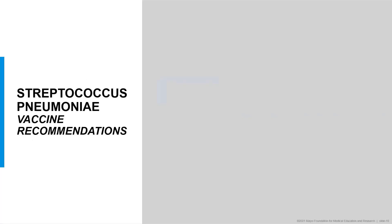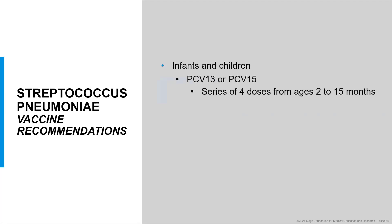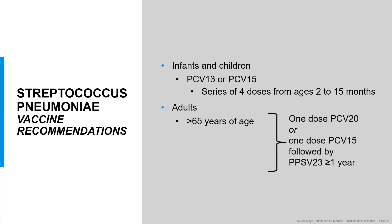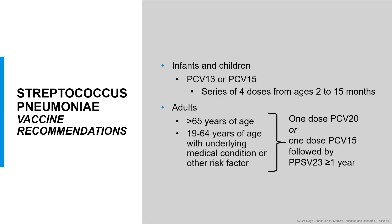Current recommendations include routine use of Streptococcus pneumonia vaccines in children and adults. In infants and children, Prevnar 13 or Prevnar 15 is indicated in a series of four doses occurring over ages 2 to 15 months. In adults over 65 years of age, a single dose of Prevnar 20 is recommended. Alternately, a single dose of Prevnar 15 followed more than one year later by a single dose of Pneumovax is also appropriate. This vaccination strategy is also indicated for adults less than 65 years who have underlying medical conditions which increase their risk for streptococcal infection.